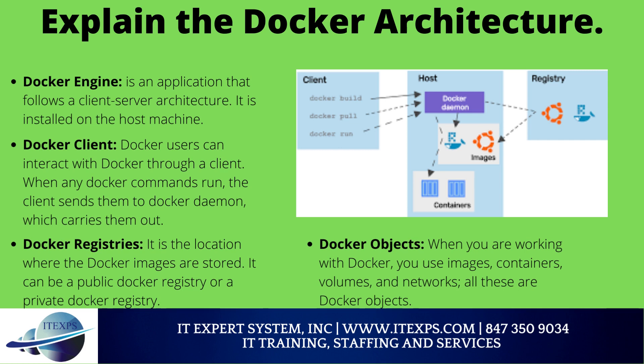Images: Docker images are read-only templates with instructions to create a Docker container. A Docker image can be pulled from Docker Hub and used as-is, or you can add additional instructions to the base image and create a new modified Docker image. Containers: After you run a Docker image, it creates a Docker container. All applications and their environment run inside this container. You can use Docker API or CLI to start, stop, or delete a Docker container.